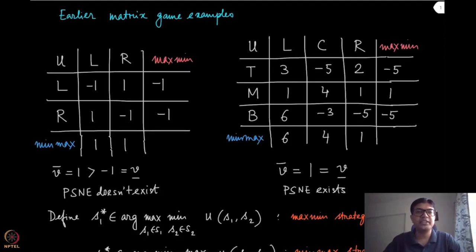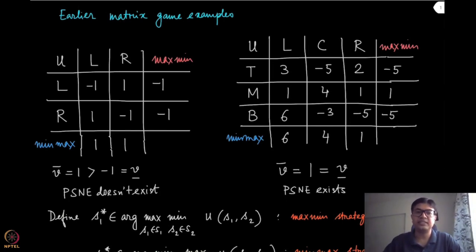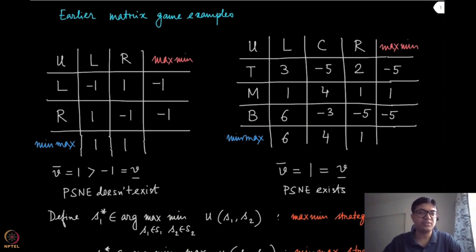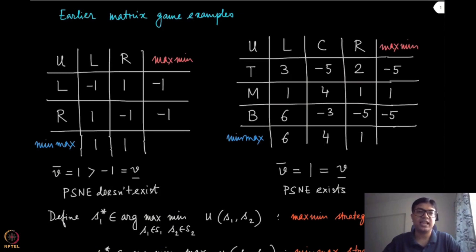While explaining the matrix game, we gave two examples. In one case the PSNE existed and in the other it did not. Have you noticed something interesting between these two games — where PSNE exists and does not exist — and the fact that maxmin and minmax were equal or unequal?